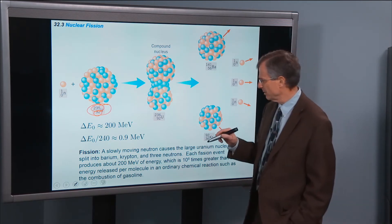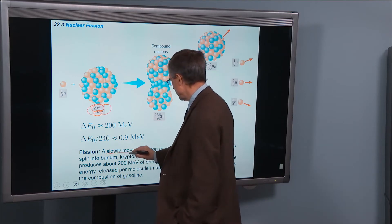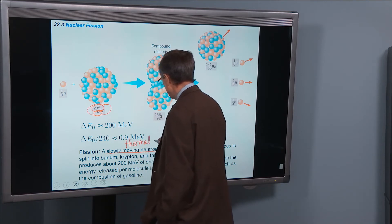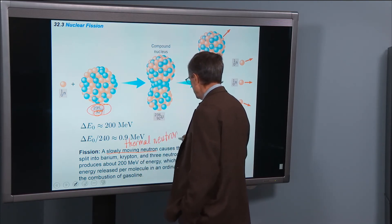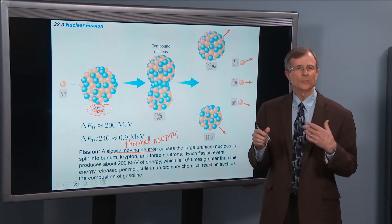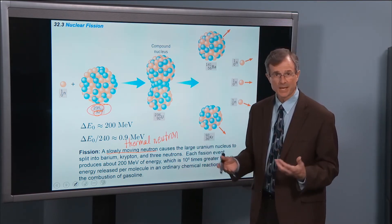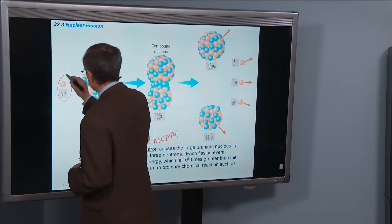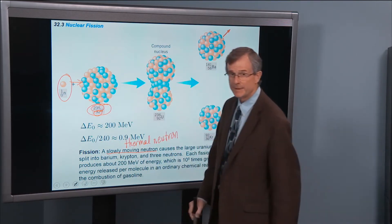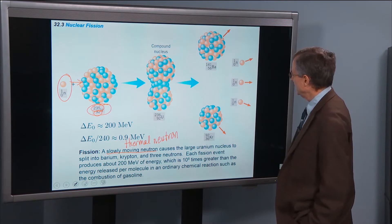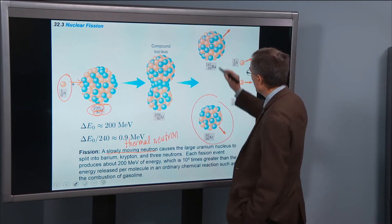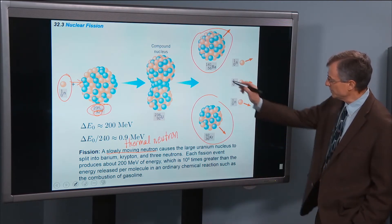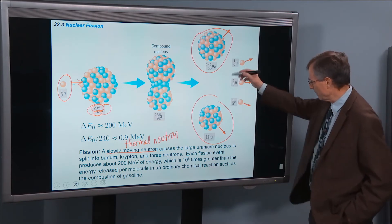If hit with a slowly moving neutron, sometimes called a thermal neutron, just a neutron that's bouncing around due to its own random motion because it's at a finite temperature, if you hit this nucleus with a neutron, doesn't even have to be moving very fast, you can split it into two daughter nuclei. It first goes through a compound stage, but the bottom line is you get two nuclei.